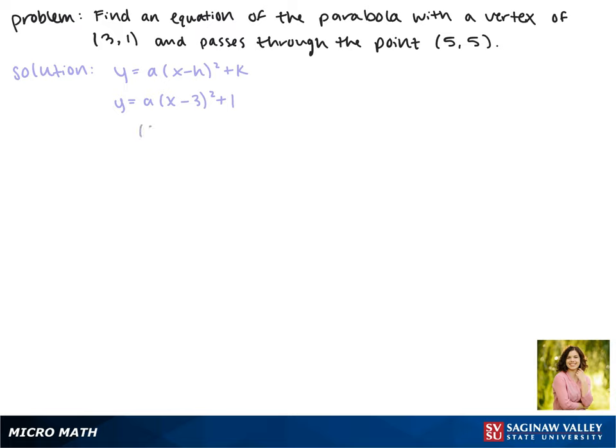To solve for a, we're going to plug in the point (5,5), so a 5 for x and a 5 for y. We get 5 equals a times (5 minus 3) squared plus 1. So 5 minus 3 is 2.